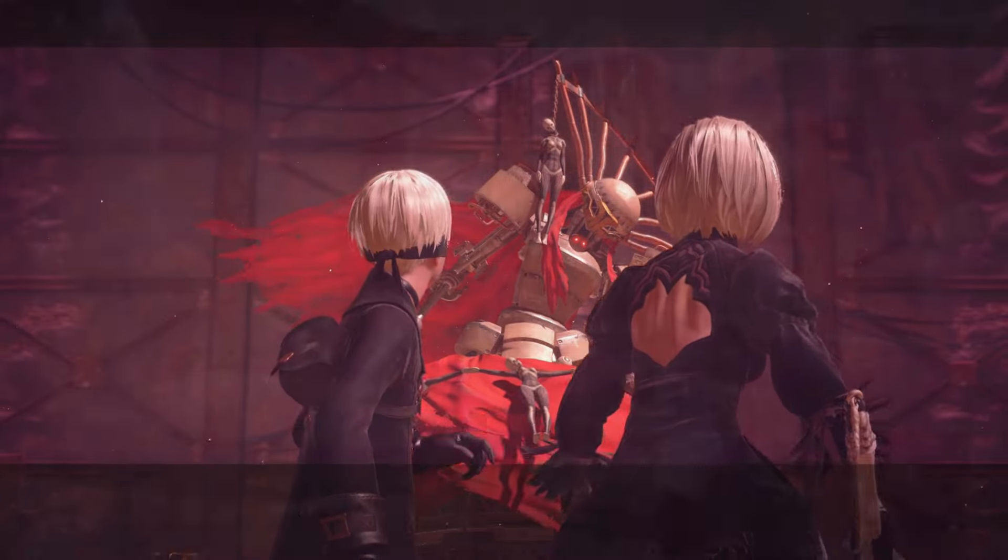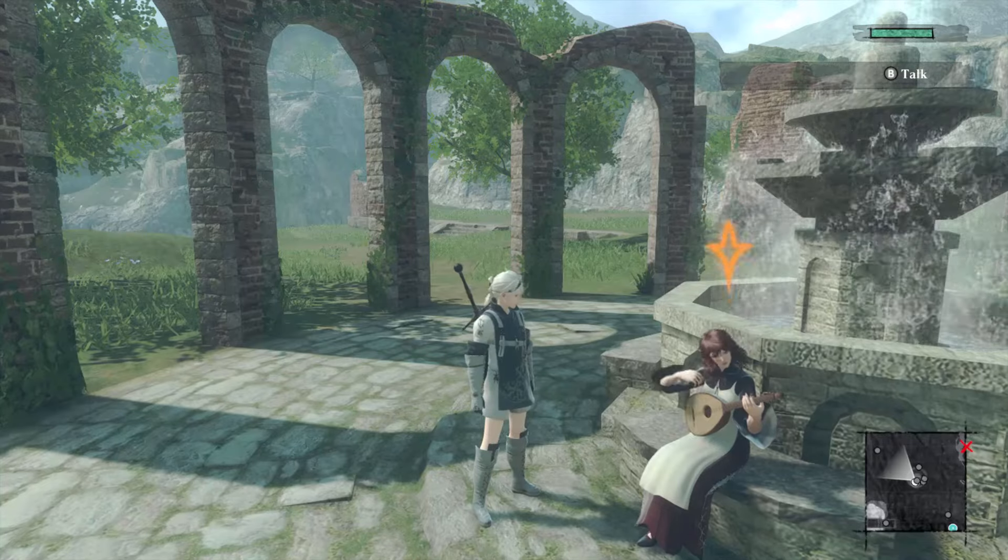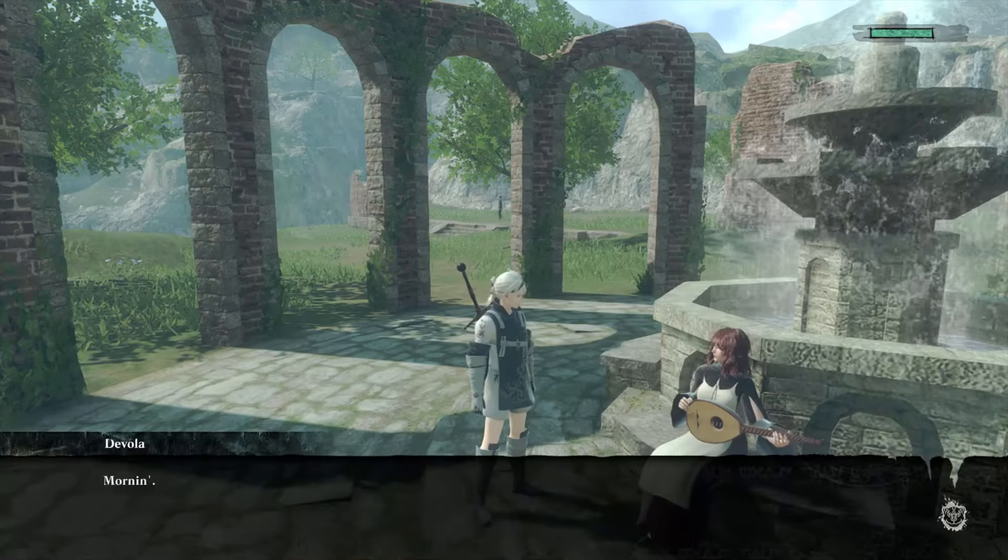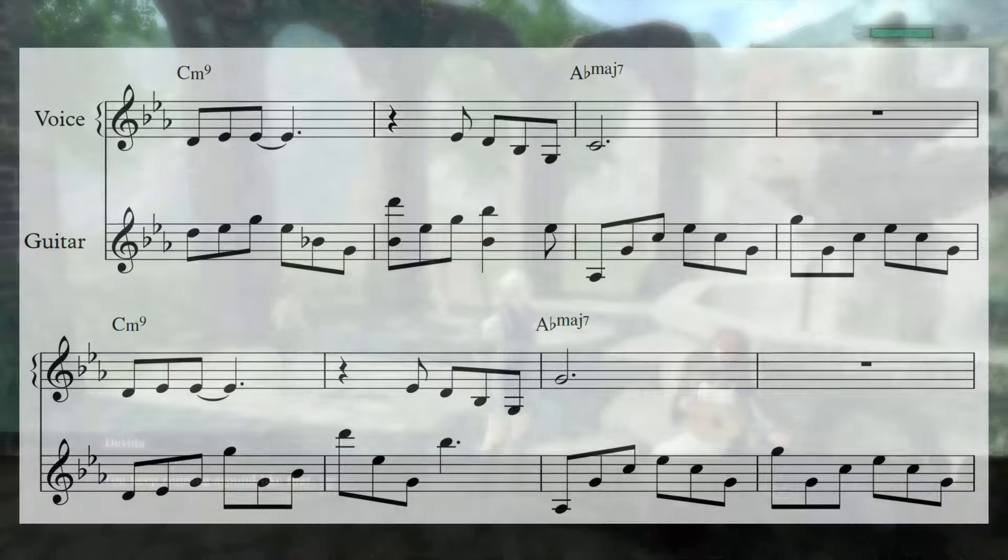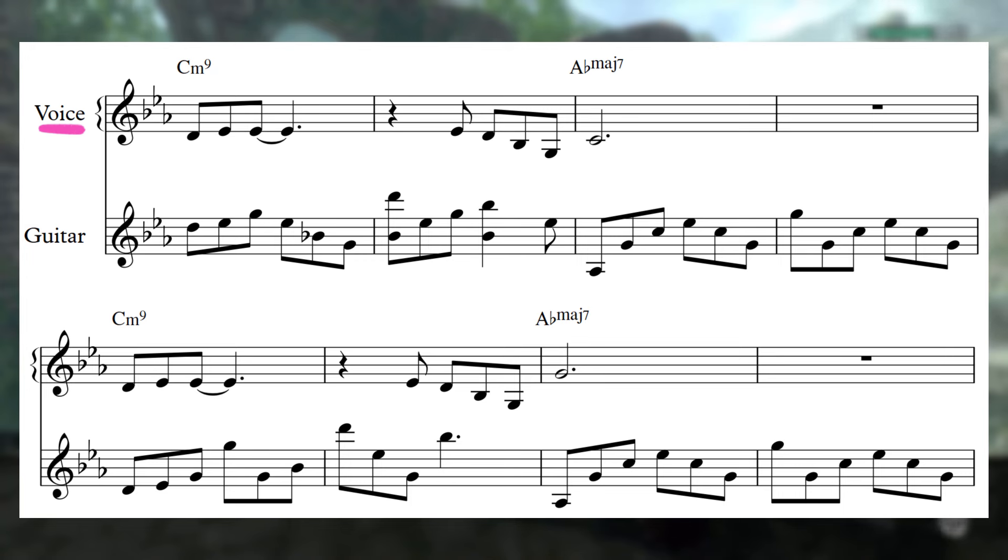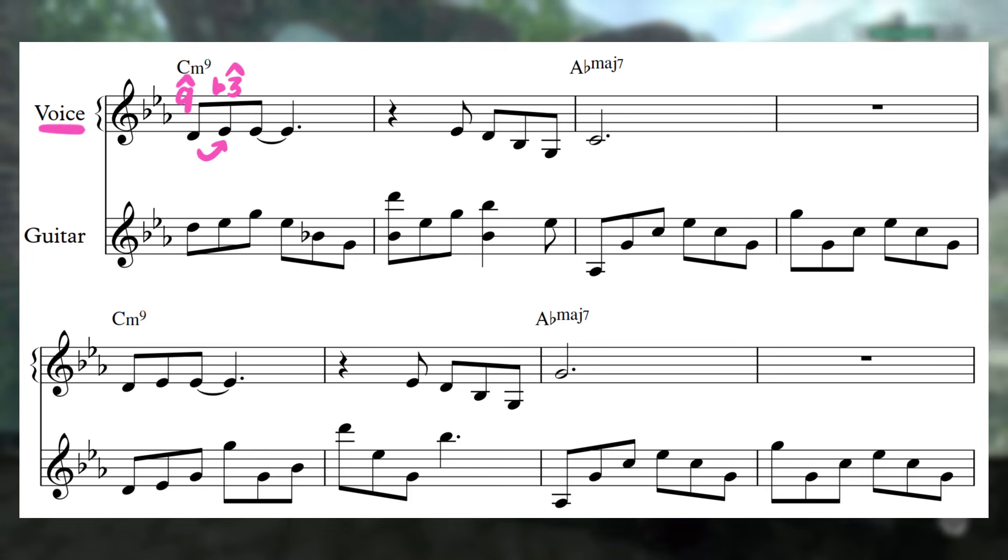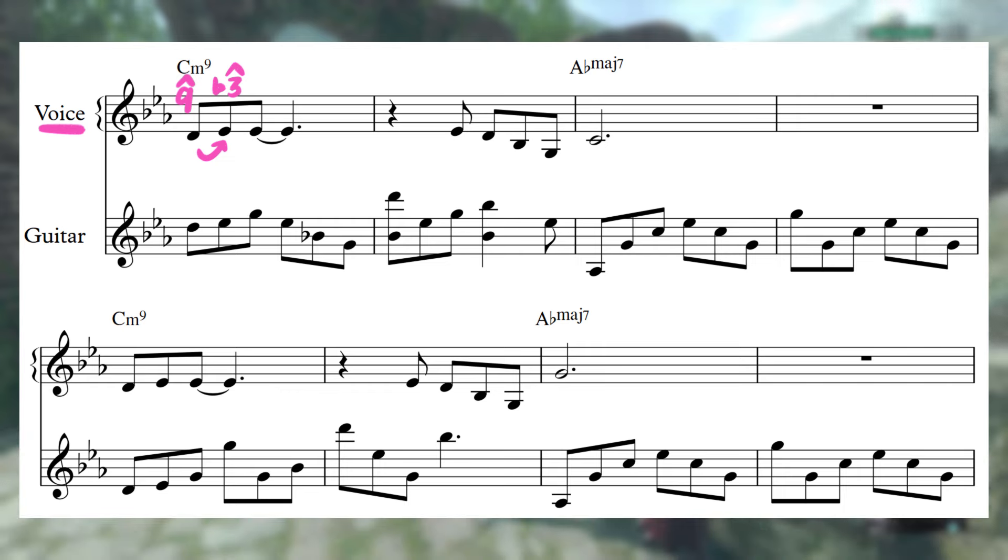If the games had a theme song, it would be Song of the Ancients, which appears throughout both Nier and Nier Automata in a few different forms. This tune has it all: solo vocals singing unintelligible lyrics, a melody entirely based around this motif of hitting the ninth of our tonic C minor chord and bouncing up to the third.